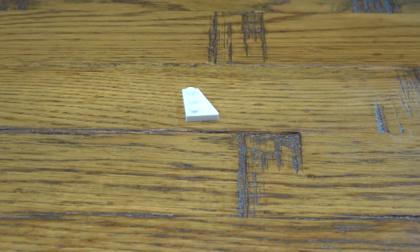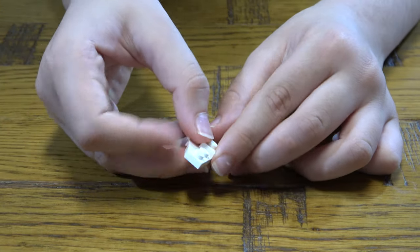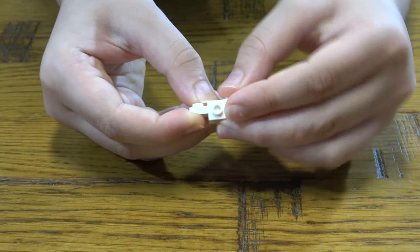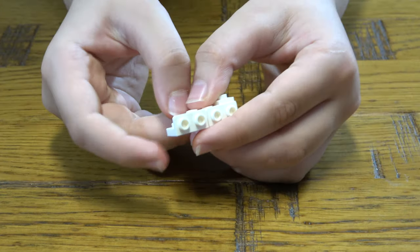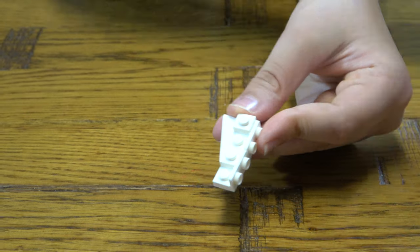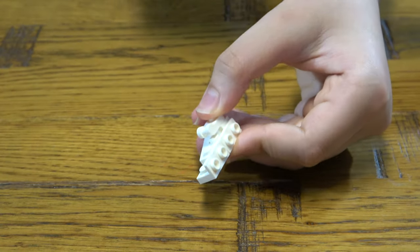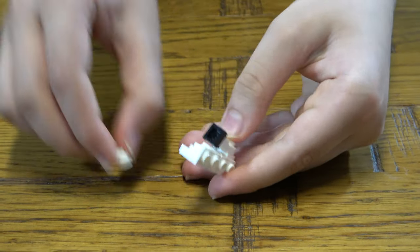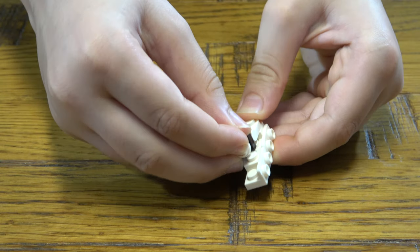Then next you get this here, place this onto there, get this. Then get two of these and place them onto there like so, and then place this here.